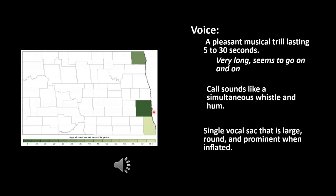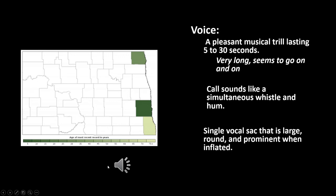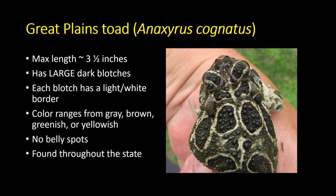American toads have a spotty distribution in North Dakota. Their trill is much like the Canadian toad's but lasts much longer — typically five seconds on the short side, up to thirty seconds — it's higher pitched and much more musical, a really melodic hum lasting about thirty seconds.